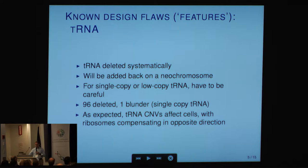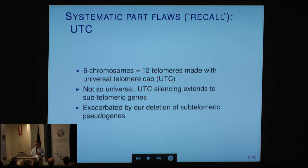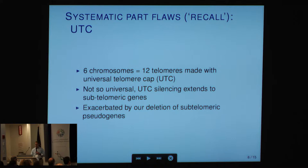Here is actually a flaw — I think we should recall this part. It's functional, but it has some issues. The universal telomere cap, if you read the papers, is systematically for a couple of chromosomes not insulating the silencing — the silencing extends a little bit too far into the subtelomere. That has been corrected in some ways. It's exacerbated a little bit because we cleaned out a lot of junk from the subtelomere; it's an area with a lot of pseudogenes. I would say that's a small thing, easy to fix.